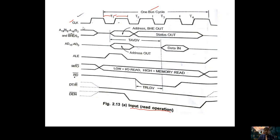In 8086, address and data lines are not directly available — they are multiplexed. We observe 21 multiplexed lines. AD0 to AD15 must be demultiplexed. During T1 these lines are converted into pure address and data. After T1, data lines are available from T2 to T4. During T1, address and data lines are processed to produce pure address lines and pure data lines separately.